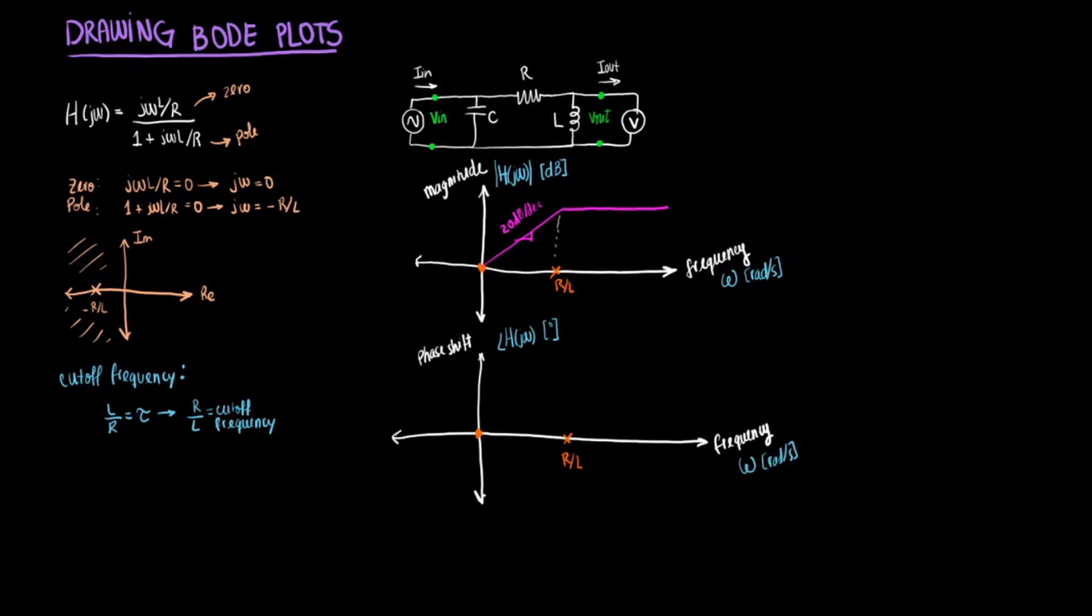Now we can draw the phase shift plot. And what's going to happen is we first have the zero. What the zero does though is it will shift your phase 90 degrees, positive 90 degrees. So you're going to start right from here at 90. And that's going to be your phase shift. And then when you hit the pole, the pole will decrease the phase shift by 90 degrees. So if you were at 90 degrees minus 90, now you're going to be all the way down to zero.